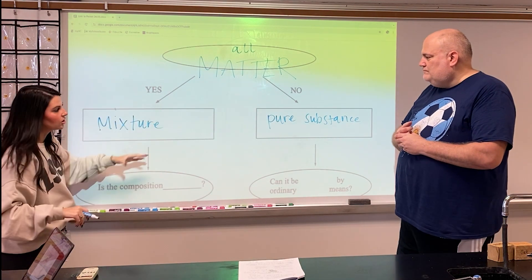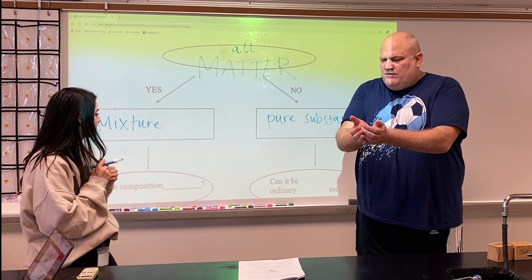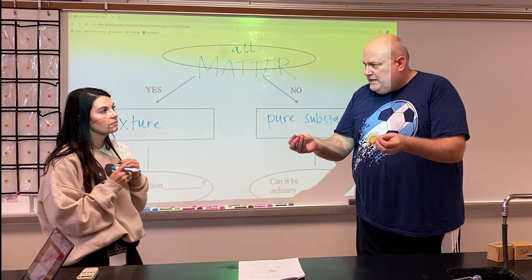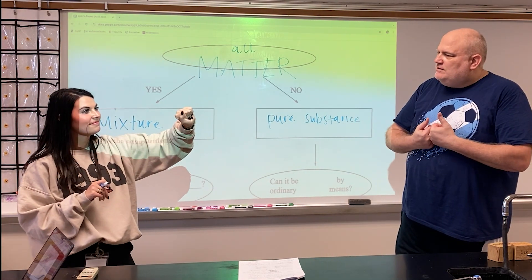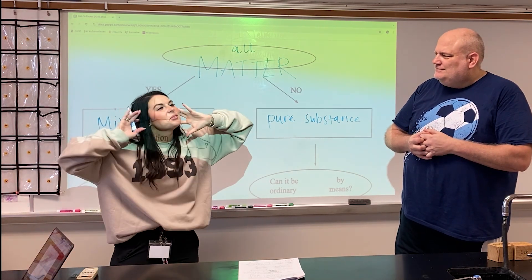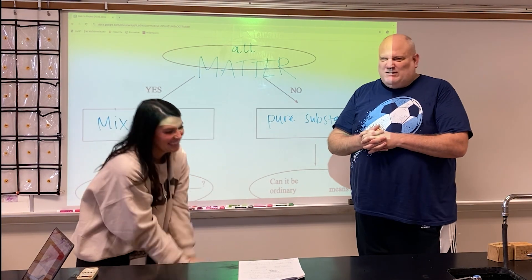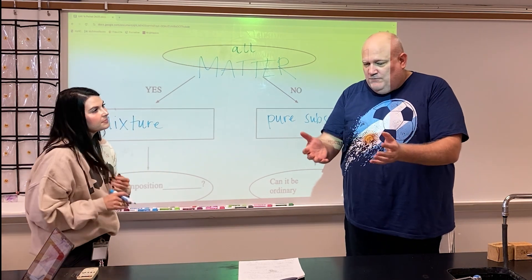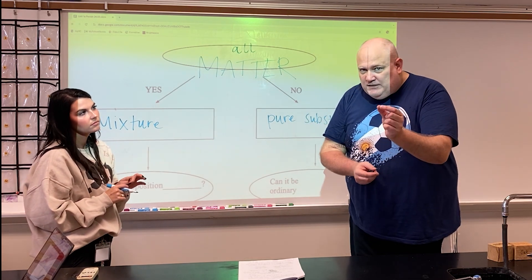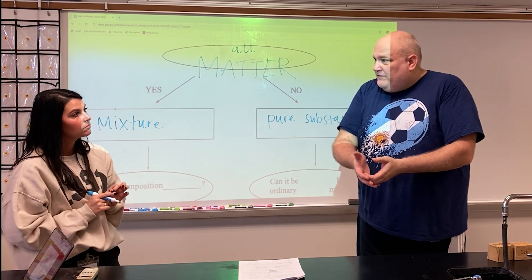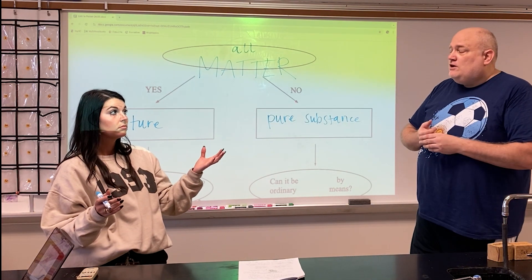The chart continues because we don't stop there. A mixture is anything where, if you have it together and pull it apart, the identity remains the same. For example, Lucky Charms — if you put all the pieces in the bowl, you could take them out and each marshmallow piece is still a marshmallow piece before and after. That's a mixture. Salt water is another example: the salt is in the water, but if you boil off the water, you just have the salt.